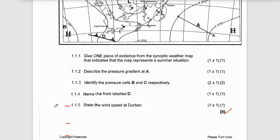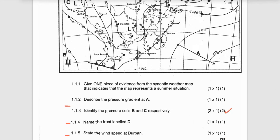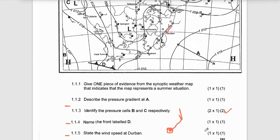1.1.5: State the wind speed at Deben. This is Deben and this is the station model of Deben. The station model of Deben looks like this. Okay, so you can have it at least with 104, then there's the wind direction and the wind speed. The wind speed at Deben is 15 knots — 15 knots. Please include the units; if you don't include the units you may not get your marks.